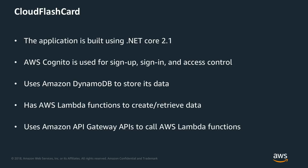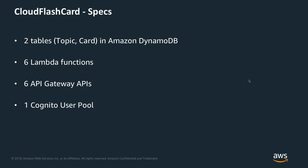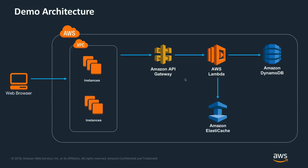We're using Amazon API Gateway APIs to call the AWS Lambda functions, so the clients are only dealing with APIs hosted on Amazon API Gateway. In this application we have two tables — topic and card in DynamoDB — six Lambda functions, six API Gateway APIs, and one Cognito user pool. The architecture has the browser calling ASP.NET Core hosted on EC2 instances. I can make this architecture highly scalable and highly available by putting it in two different AZs using an Auto Scaling group and Elastic Load Balancer, calling Amazon API Gateway, AWS Lambda functions, and Amazon DynamoDB with the use of Amazon ElastiCache.